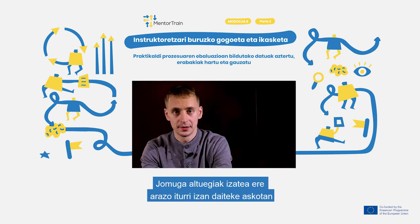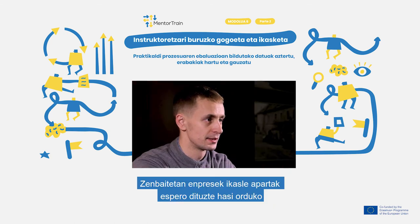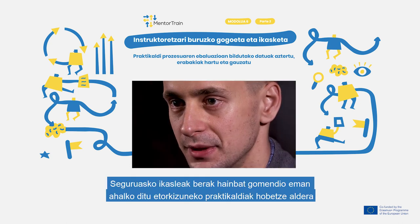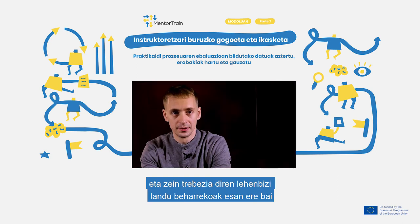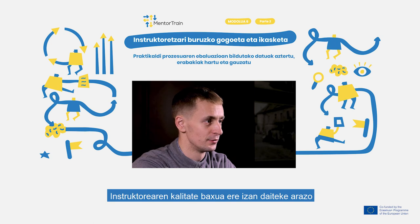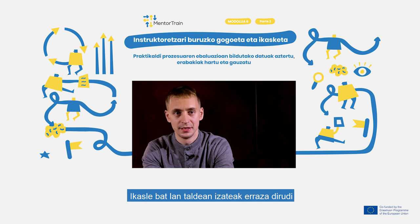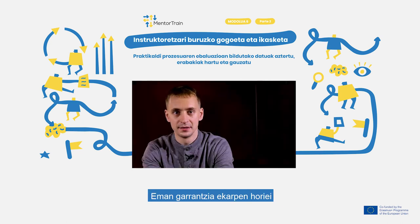Too-high expectations of the apprentice is another common source of problems. Sometimes companies expect their apprentices to be brilliant straight out of the box, but getting an apprentice working takes time. Your apprentice can give you tips on how to improve future apprenticeships and what skills must be first acquired. Low quality of mentoring is often a problem as well — not everybody has a good mentoring plan, and the student can help you point out strengths and weaknesses of the mentor and the mentoring system in general. Take this seriously.